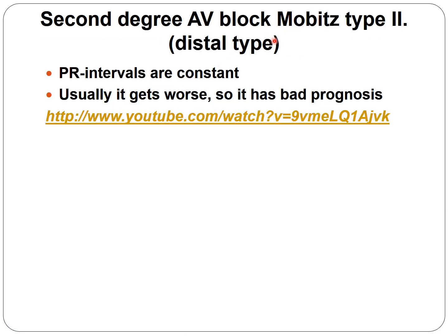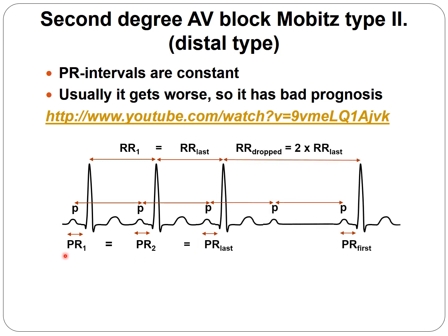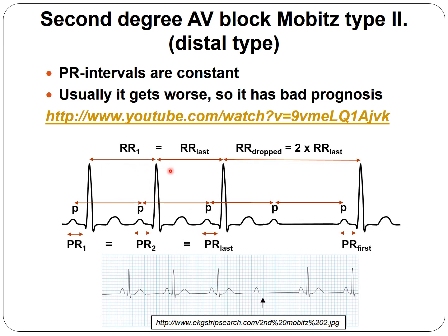Second degree AV block Mobitz Type 2, or the distal type: here the PR intervals are constant — they can be longer or normal, but they do not change. This type usually worsens and is mostly caused by ischemia. It has a bad prognosis and requires immediate pacemaker implantation. On the graph, the PR intervals are constant, and when a beat is dropped, the pause is exactly twice the RR interval — this is how we diagnose Mobitz Type 2. The last PR equals the first PR.